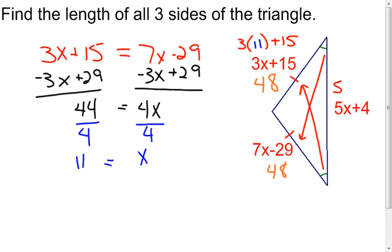So if I take my 5, put my 11 in here for X, and then add on the 4, we find out that that side is going to be 55 plus 4, which puts me at 59.